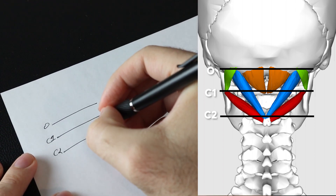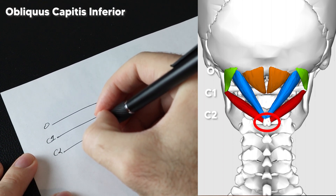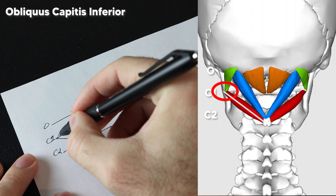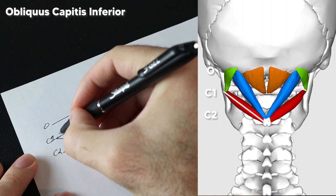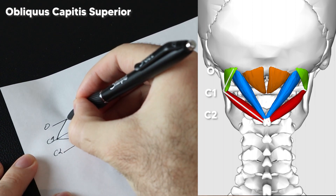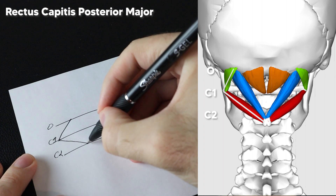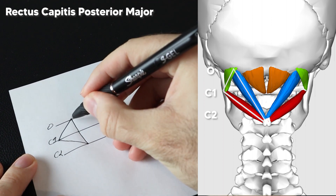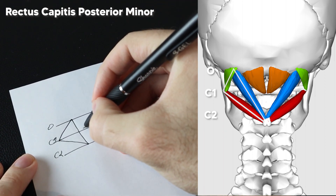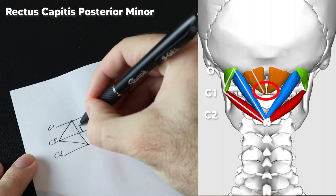For our first muscle, we have the obliquus capitis inferior, and that goes from the spinous process of C2 — basically in the middle — up to the transverse process of C1, which are on the lateral sides. Our next muscle is the obliquus capitis superior, going from the transverse process of C1 up to the occiput. Then the rectus capitis posterior major goes from the spinous process of C2 up to the occiput, making a little triangle. Our last muscle is the rectus capitis posterior minor, which goes from the posterior tubercle of C1 — a rudimentary spinous process in the middle — up to the occiput as well.